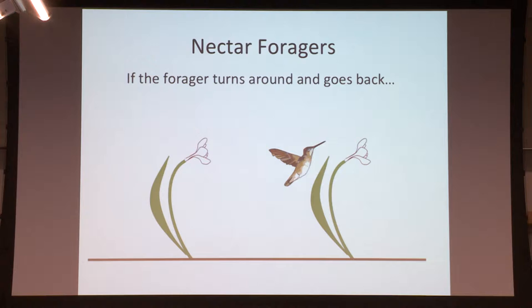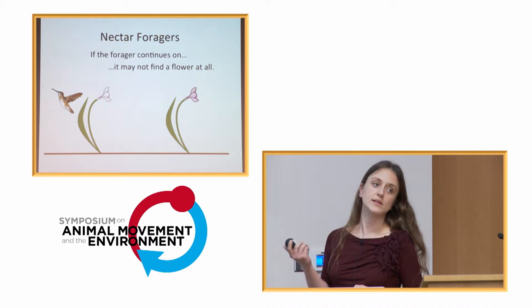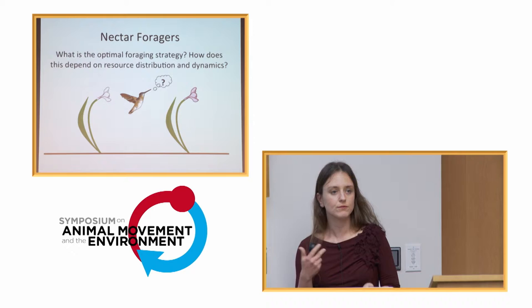If the forager turns around and goes back, the flower, depending on the particular flower, may have had some time to rejuvenate its nectar supplies, but it may not be completely full yet. So the forager may want to continue on and try to find that jackpot with a full flower, but there it runs the risk that it may not find a flower at all. What we really want to understand is for a particular landscape with a particular distribution of floral resources and a particular type of floral dynamics, what foraging rules should these nectar foragers use?